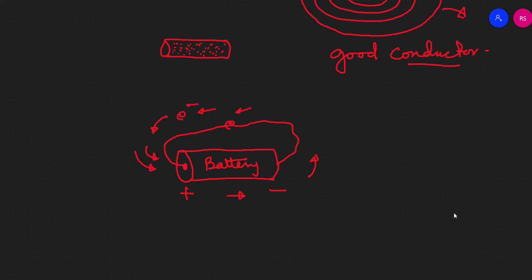The electron will then experience the positive charge attraction. The battery moves the power, and the electrons carry negative charge, so the electron will experience attraction. If the battery is connected and moving, the electron will move, and the flow of electrons through the circuit becomes the current.